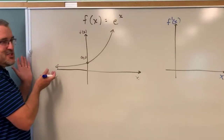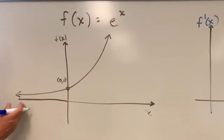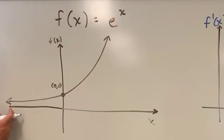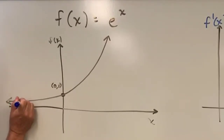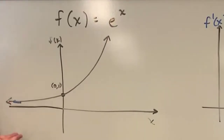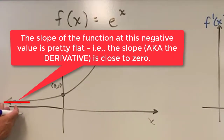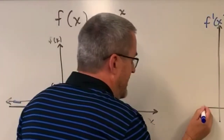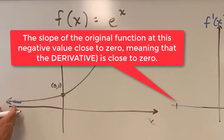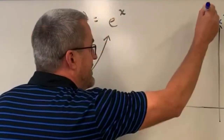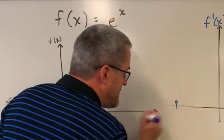Let's start over here on the left side. Imagine for some relatively negative values of x, like say right here. If I was to increase x by just a little bit, my function is only going to increase by a tiny amount. Therefore, the derivative out here would be pretty small. So on this graph, thinking about the derivative for some relatively large negative value for x, I'm going to have a derivative result that's pretty small.